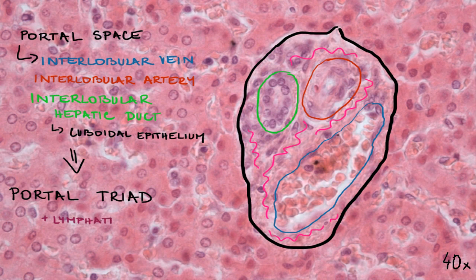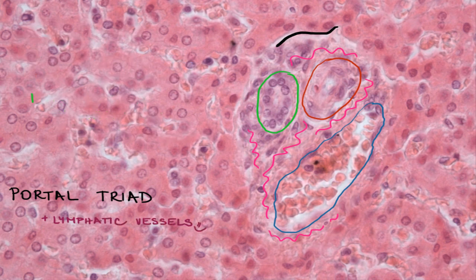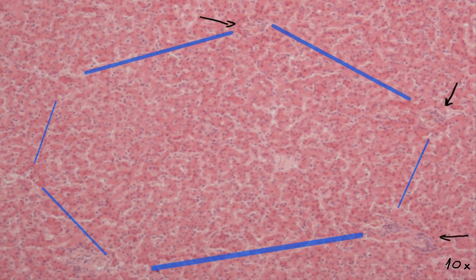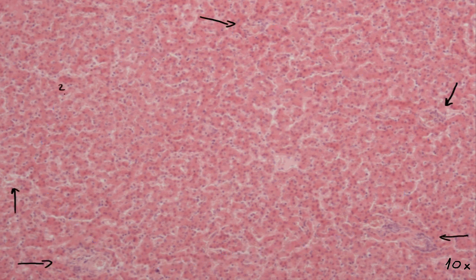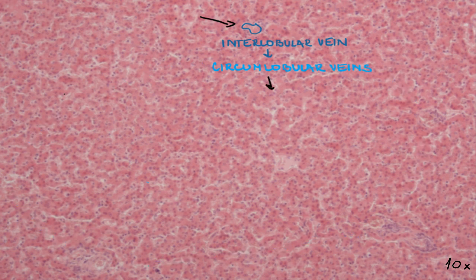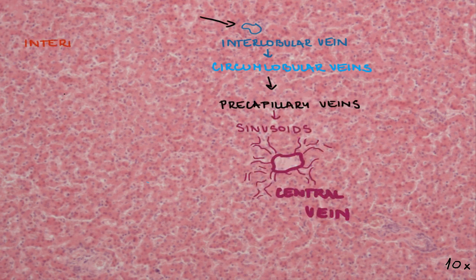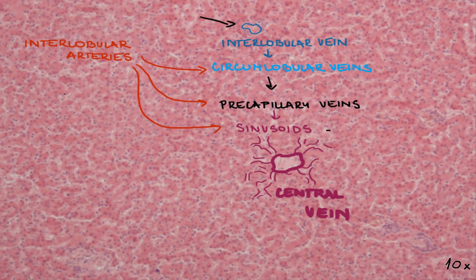This area also contains lymphatic vessels, and the portal spaces make up the corners of the lobules. Interlobular veins branch into circumlobular veins at their periphery. Circumlobular veins branch into precapillary veins, and these drain into liver sinusoids. Interlobular arteries drain directly into circumlobular veins, precapillary veins, or sinusoids. We can find mixed arterial and venous blood in sinusoids and central veins.